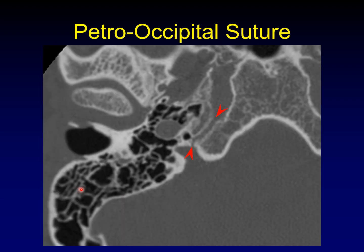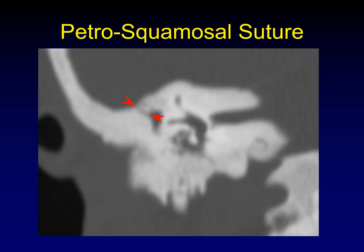Our next is the petrooccipital suture that lies along the lateral aspect of the inferior clivus. Then the petrosquamosal suture — I had to find a patient with osteopetrosis to show a good example of this, but this runs from the middle ear cavity up to the middle cranial fossa. It's usually difficult to appreciate, but it can, if it gets enlarged, look like a gap in the tegmen.